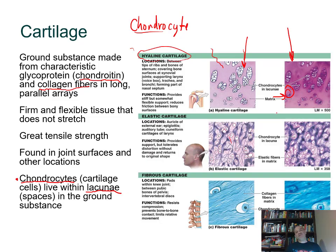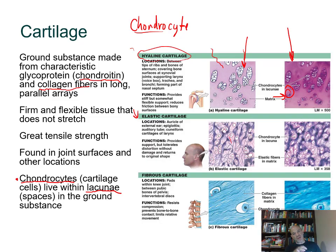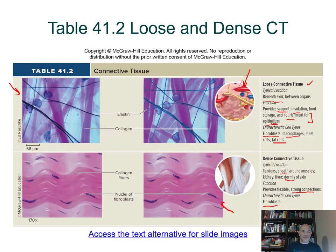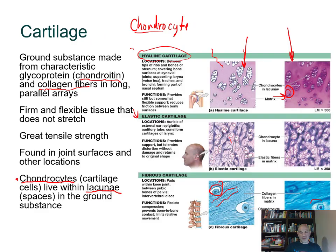The most common type is hyaline cartilage, found on the ends of bones at joints and lining the trachea. Elastic cartilage is found only in the ears and epiglottis. Fibrocartilage, found in the discs between vertebrae, contains lots of collagen for heavy compression forces. To distinguish cartilage from dense regular connective tissue: in cartilage you can see the lacuna cavity where the chondrocyte sits; fibroblasts in dense connective tissue simply sit on top of collagen fibers without lacunae.